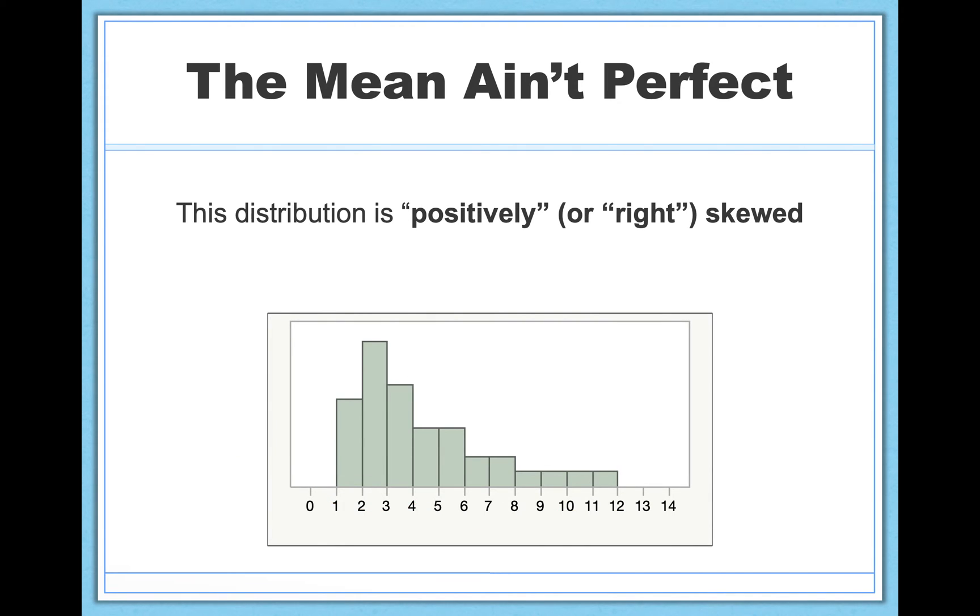Now, we also have positively or right skewed distributions of data. So you can kind of infer why we call it this. The skew is essentially in the right direction in this case. It's in the positive direction. That's where the outliers are. And things work kind of the same way. The mode doesn't really care about that skew. It's still at the highest point in the data set. The median cares a little bit. It's influenced a little bit by the skew. And the mean is really pulled by that skew.